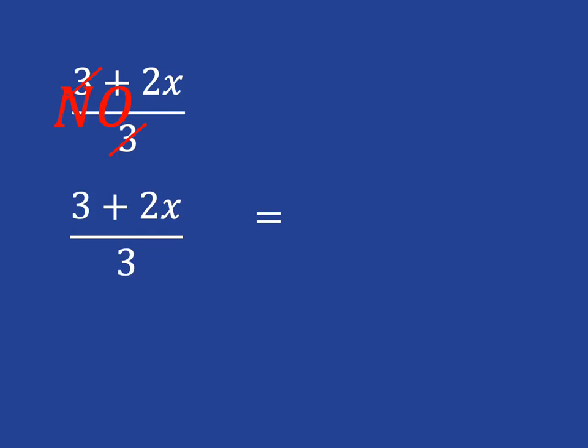What we'd have to do instead is to say, the 3 must divide into the 3, that gives me 1. And then I've got the 3 dividing into the 2x. That's not going to work out very neatly, but that's fine. I can just write it as plus 2x/3.